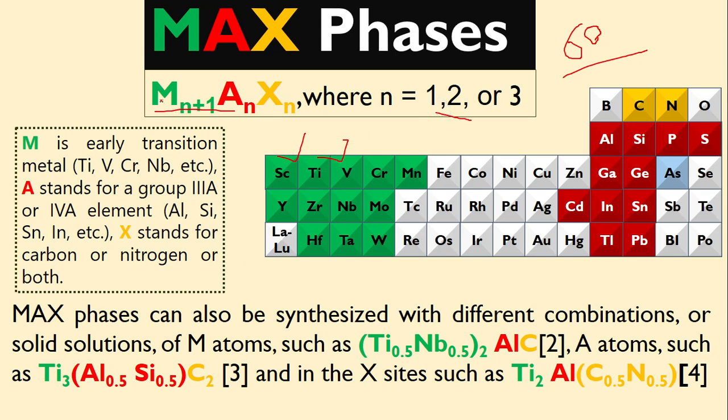Another interesting thing is you can also use combined M, like you can use titanium-niobium together. Similarly, you can use A combined like aluminum-silicon. You see here, in this case we use basically the M transition metal combinations, and then we use this A.